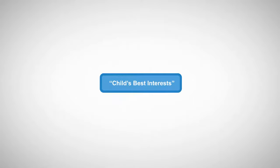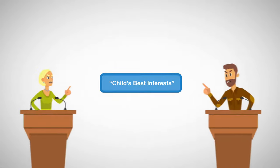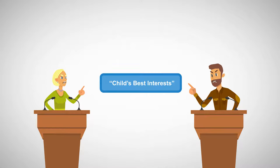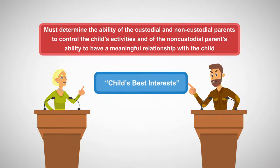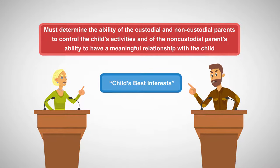Custody decisions usually start with the competing rights of the parents, and in cases where there are two parents vying for custody, courts must determine the ability of the custodial and non-custodial parents to control the child's activities, and the non-custodial parent's ability to have a meaningful relationship with the child. Still, the underlying basis for any decision must be the Best Interest of the Child. The Best Interest of the Child Standard is a fact-based test, and different states use different factors to reach this determination.